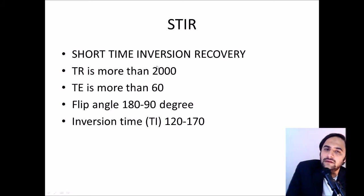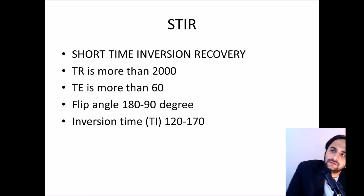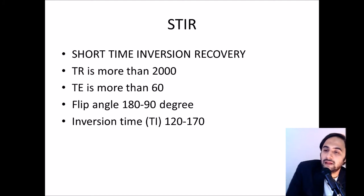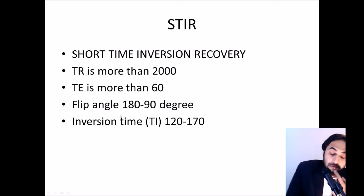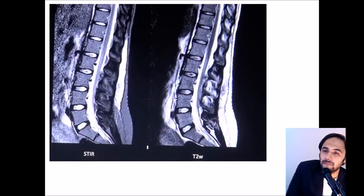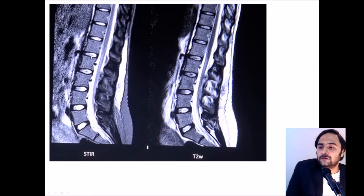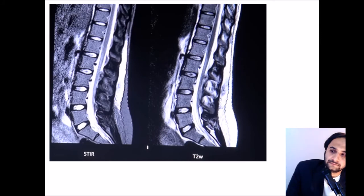STIR — short time inversion recovery — is one of the types of fat subtraction. Its parameters: TR more than 2000, TE more than 60, flip angles between 90 and 180 degrees, and inversion time 120 to 170. The flip angles must be checked; otherwise you cannot distinguish it from a T2 sequence. The difference between FATSAT and STIR is that in a STIR image, the total body fat is removed — including fat from the bone marrow — making it more complete than a regular FATSAT.